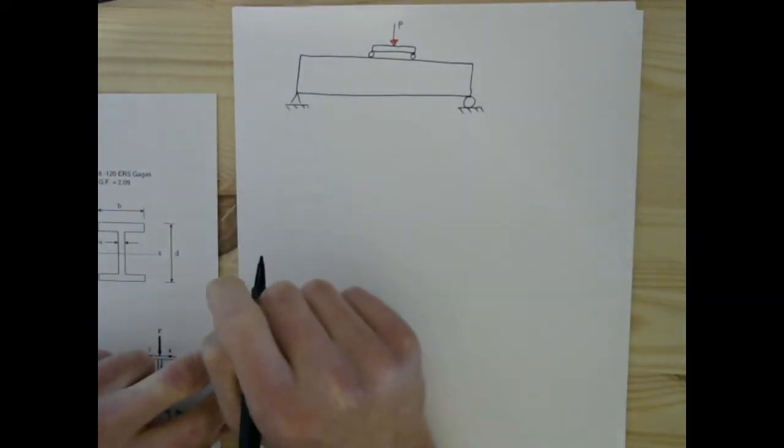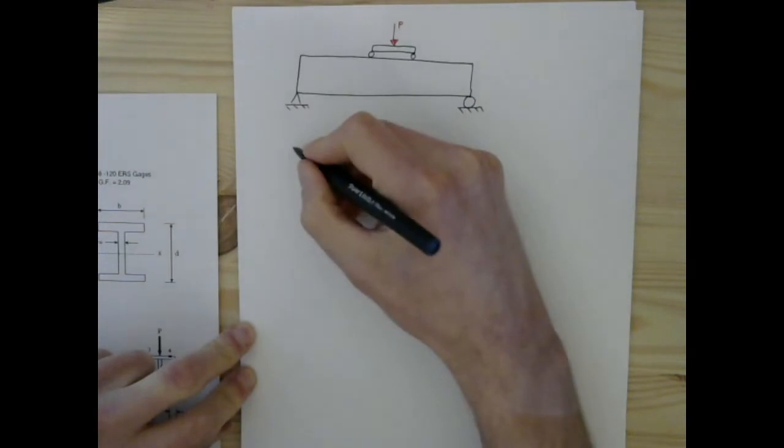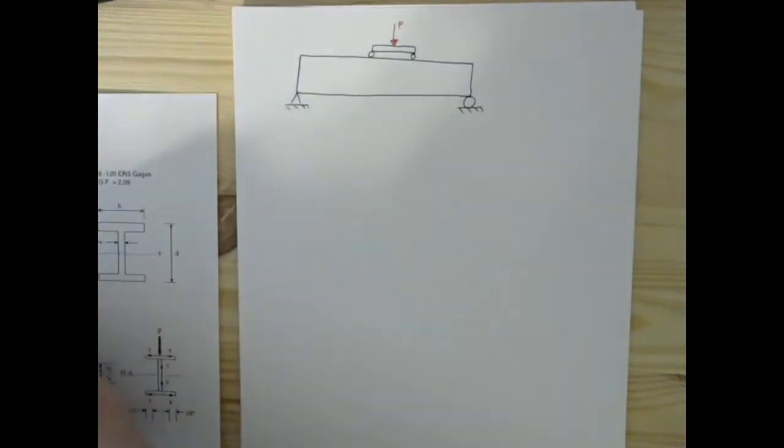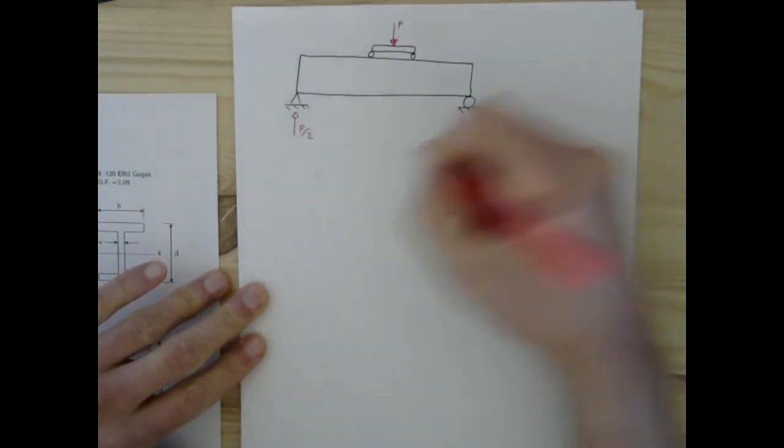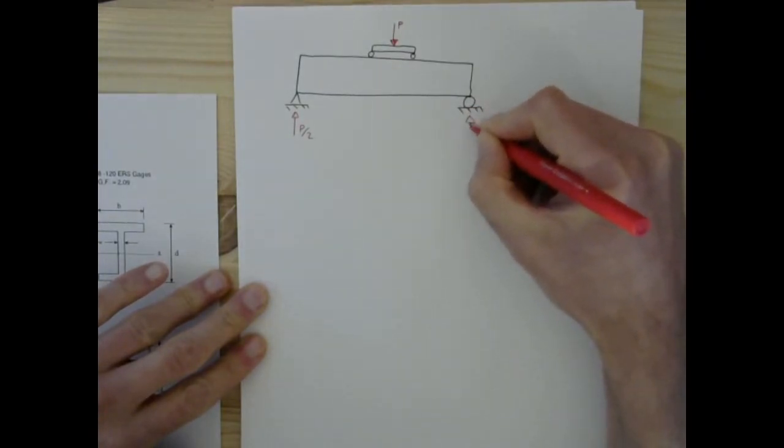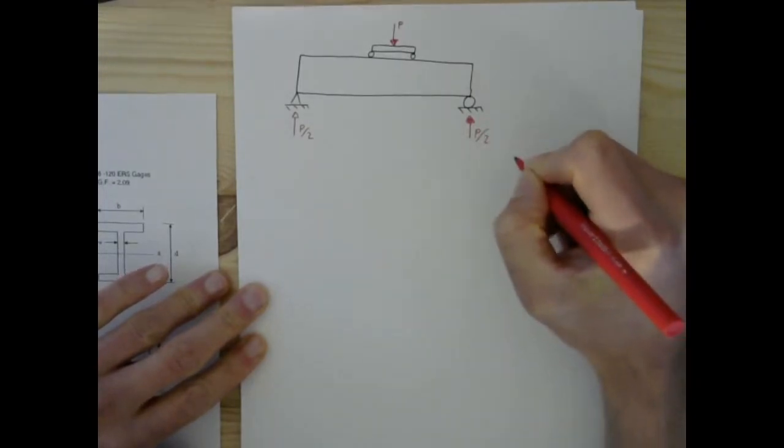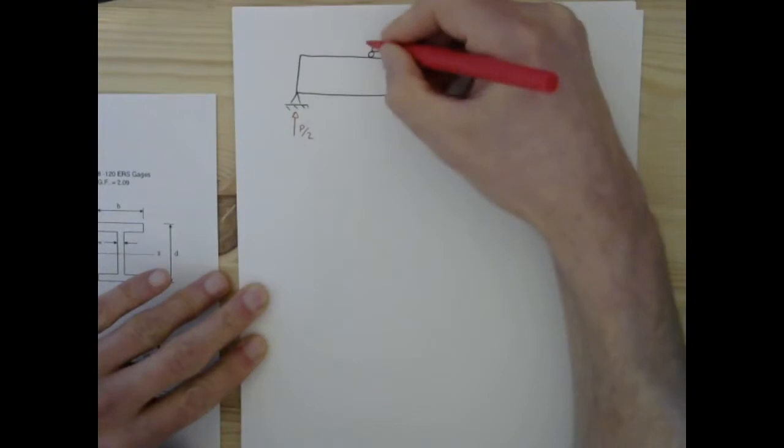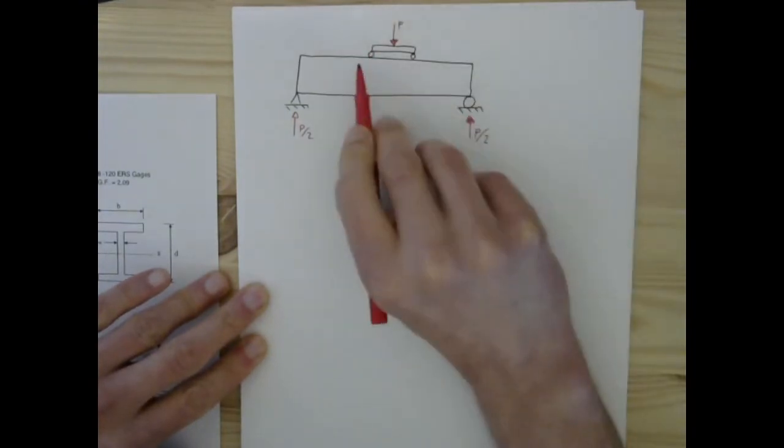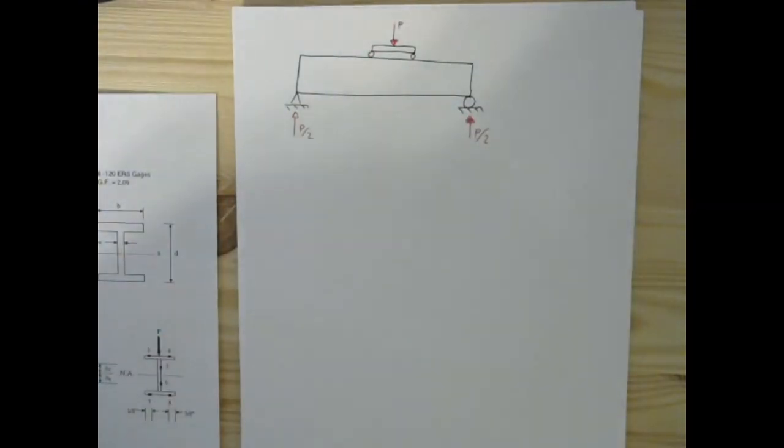Now, the result of that is going to be that this reaction at this point, by symmetry, we can immediately identify as P over 2, just like we can for this one right here. That will be P over 2, because this is going to transform this into two portions of P over 2.